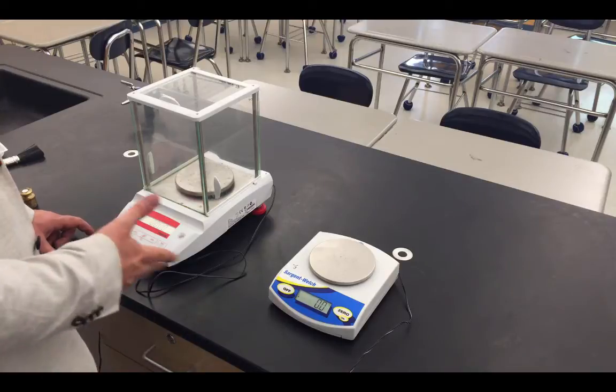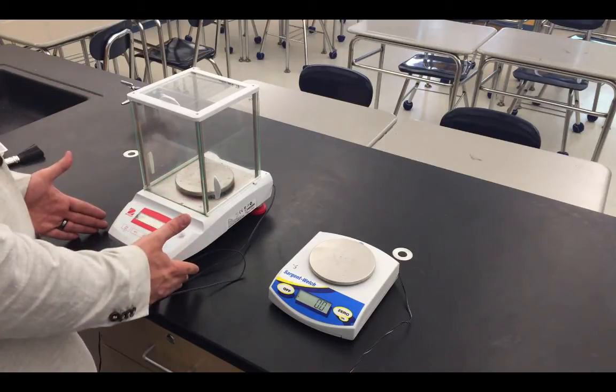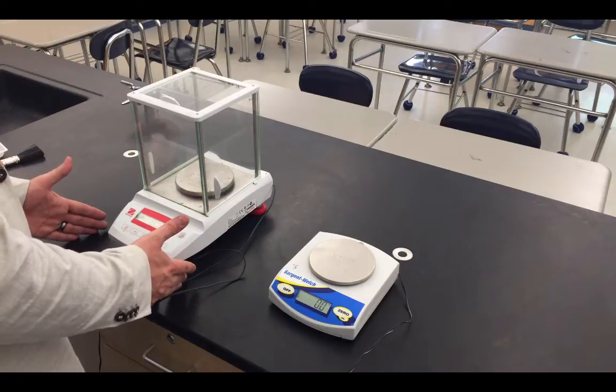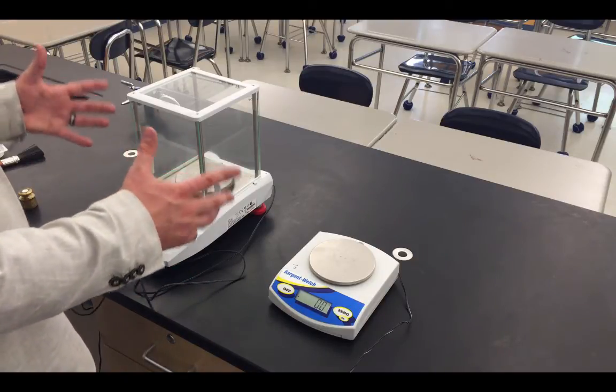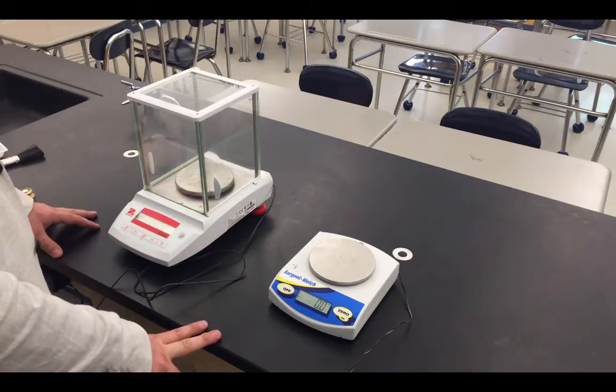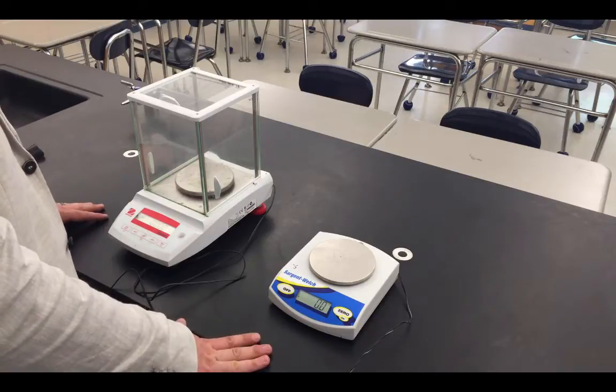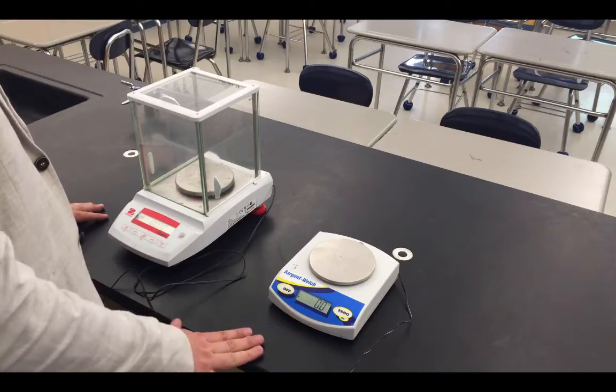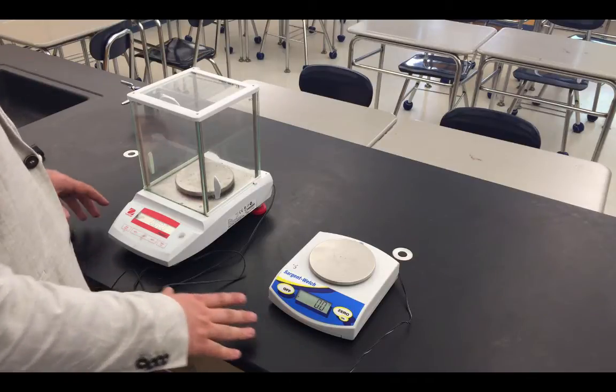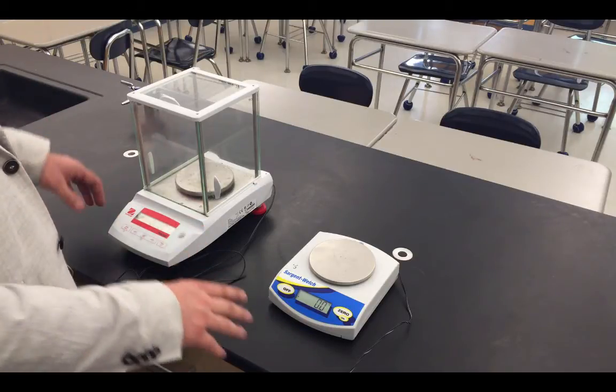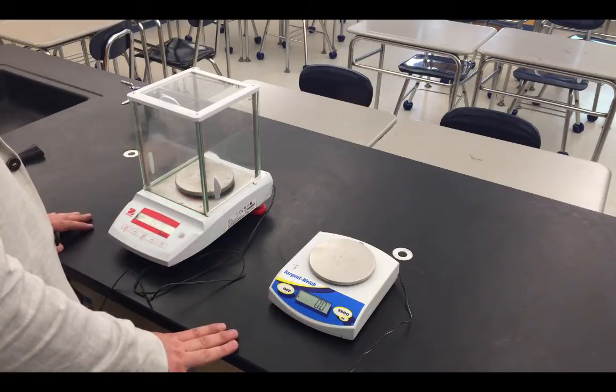Last but not least, we do actually have a couple different types of balances that we use here at the high school. This balance is known as an analytical balance. It reads a large number of decimal places, in this case this one reads three decimal places, which gives our measurements a very large number of significant digits. This balance here, conversely, is known as a pan balance. It's a simple device and as a result it reads fewer significant digits. This device only reads one decimal place in grams, usually leading us to answers in the two to three to four significant digit range, as opposed to the five or six significant digits we expect to get with a device like this.